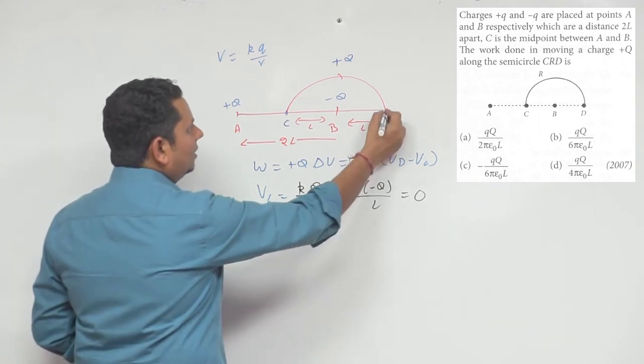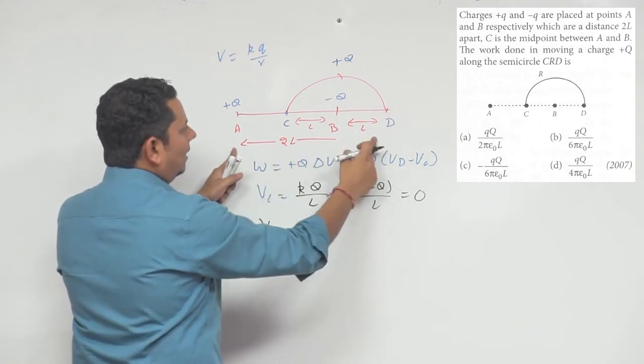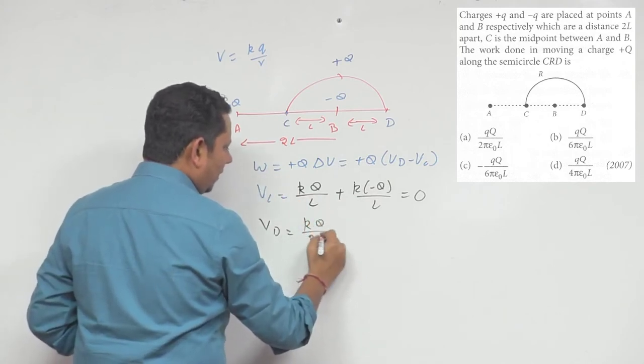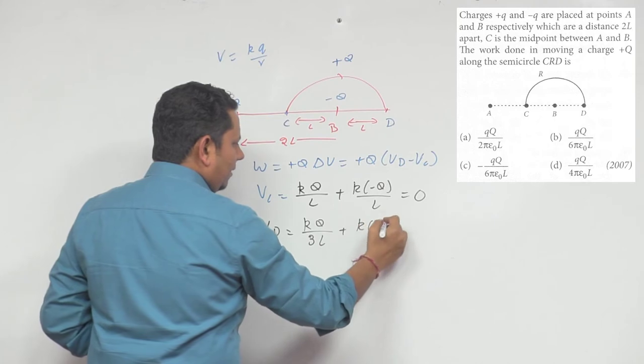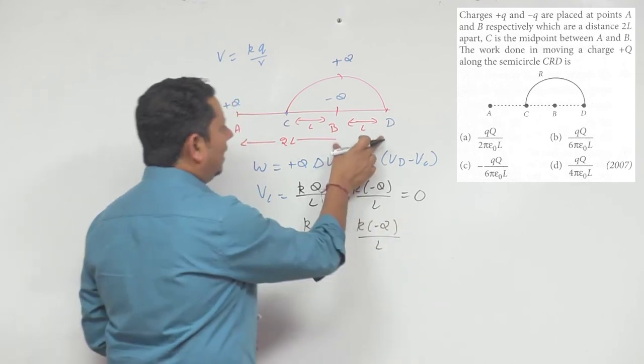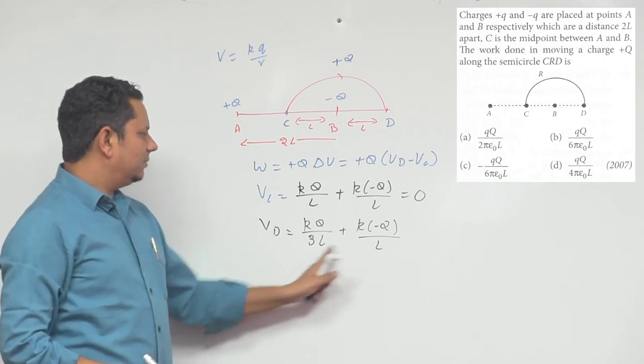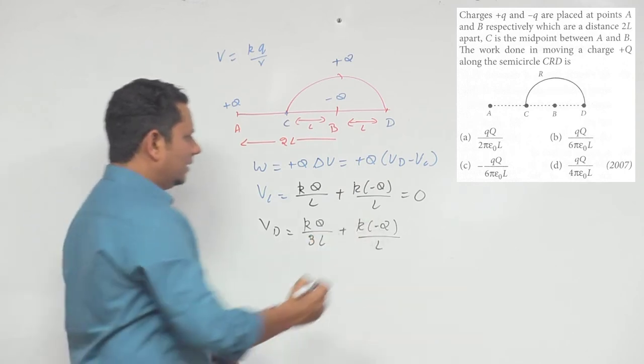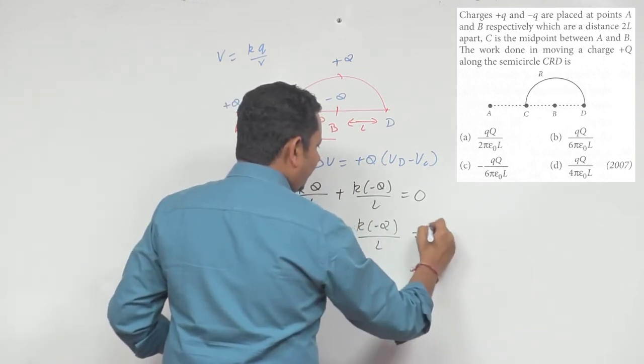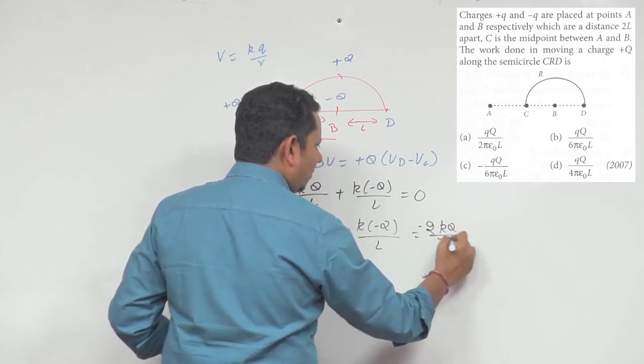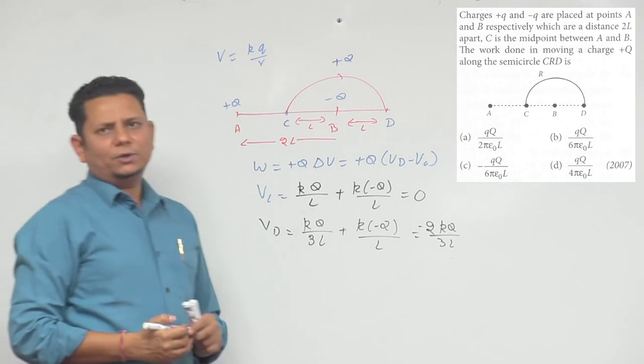Now if you talk about VD, at this point the distance is L, L, so it becomes 3L from A point. The potential will be KQ divided by 3L plus K(-Q) divided by L, because the distance from here is L. Now if we take the LCM, the LCM is 3L, 3 will be multiplied, so its value will be minus 2KQ divided by 3L. This is the potential at VD.